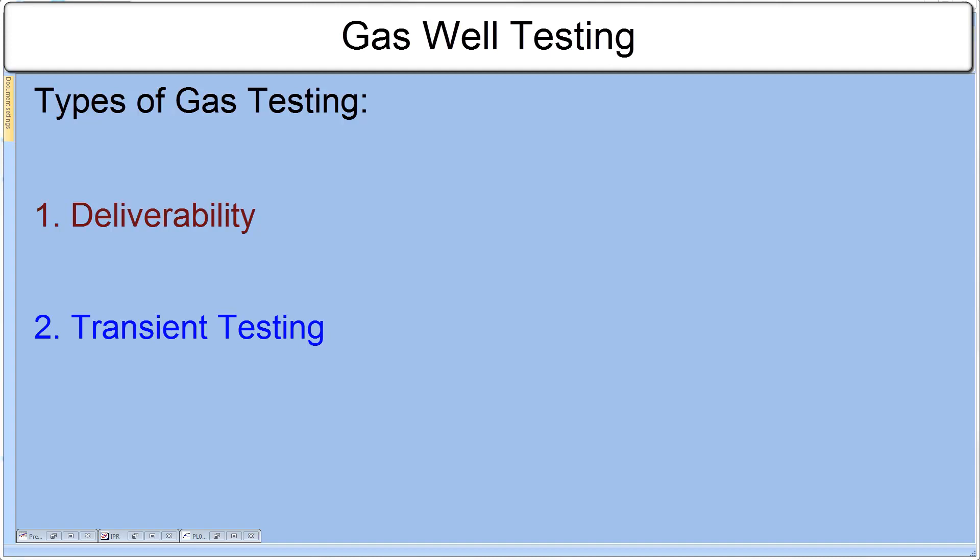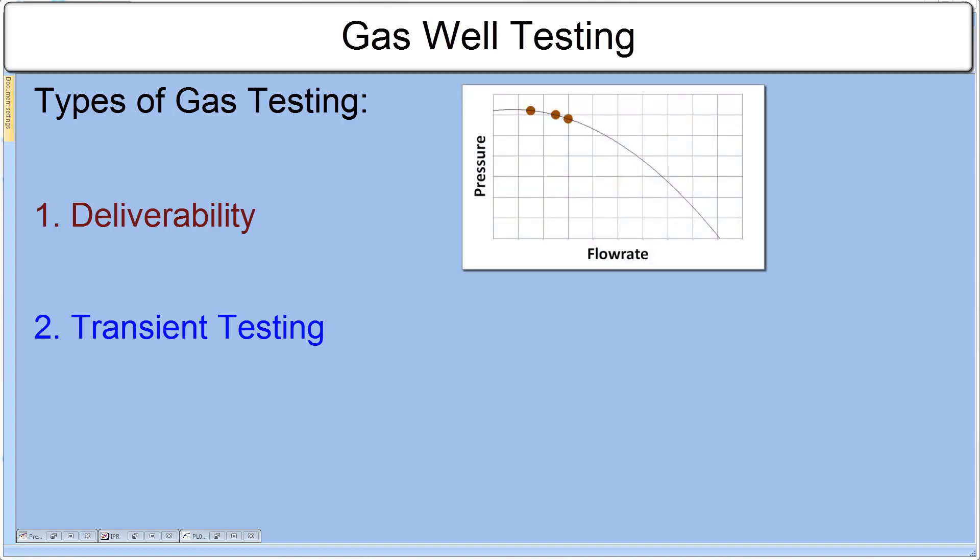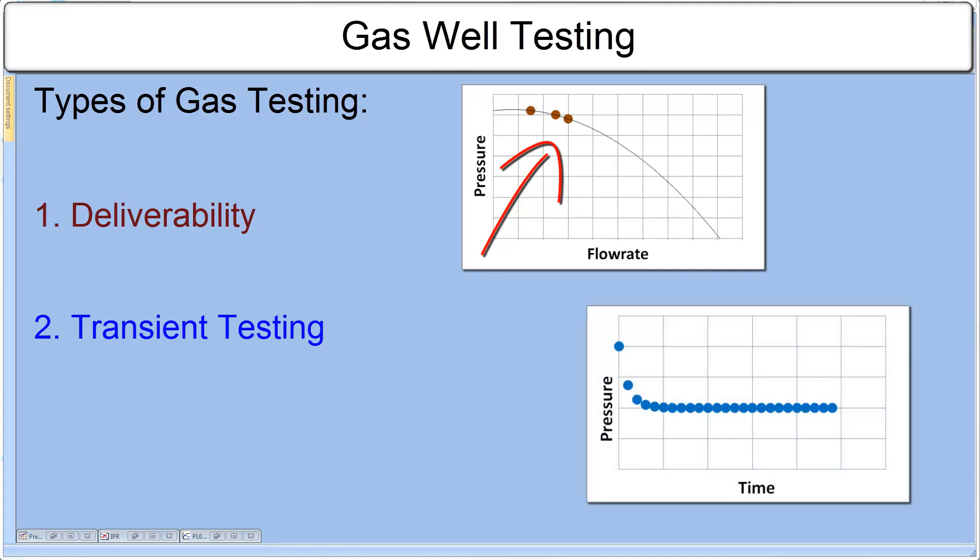There are two types of gas tests – well deliverability and transient testing. With deliverability testing, we are interested in a few points. A single point is a pressure versus production flow rate of a single flow period. Deliverability test is aimed to predict the flow rate as a function of pressure, wellhead or downhole.